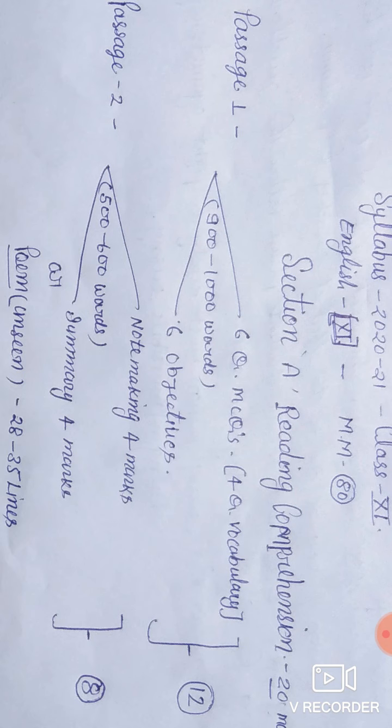Your syllabus has been divided into three parts, three sections. Section A: Reading Comprehension. Let's discuss this part. It has two passages. Passage number 1. The length of this passage is 900 to 1000 words. It carries two types of questions: six questions multiple choice and six questions objective.